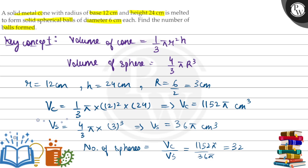So this is our final answer. Number of balls formed will be equal to 32. I hope you understood it well. Best of luck, thank you.